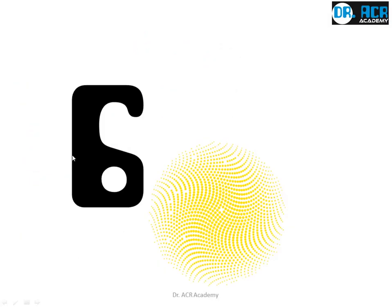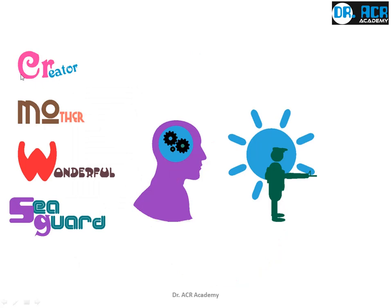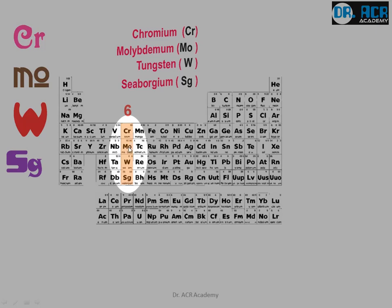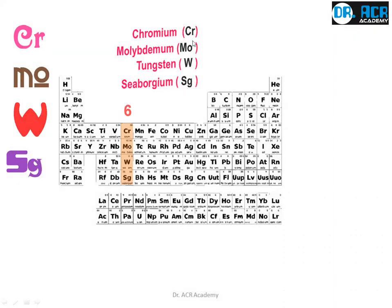Now we come to the sixth group. There was a creator who could create anything, but this story is about his wonderful mother. Her mother was known for her job — specifically for her working skills as a seaguard. Creator, mother, wonderful seaguard. This is how it is linked to the periodic table, and these are its real names.